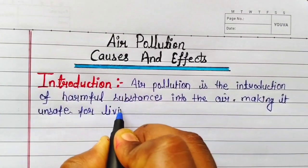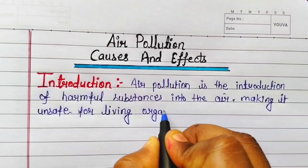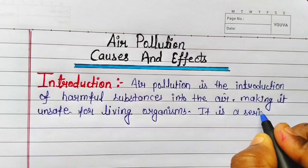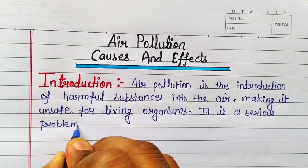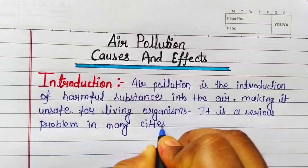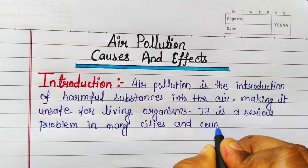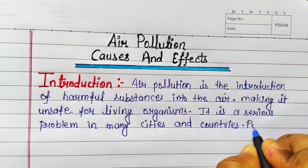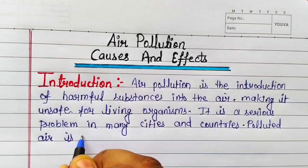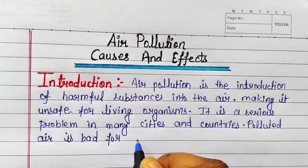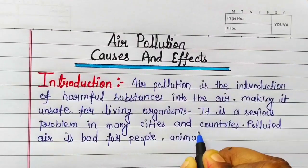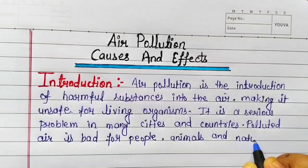Introduction: Air pollution is the introduction of harmful substances into the air, making it unsafe for living organisms. It is a serious problem in many cities and countries. Polluted air is bad for people, animals and nature.